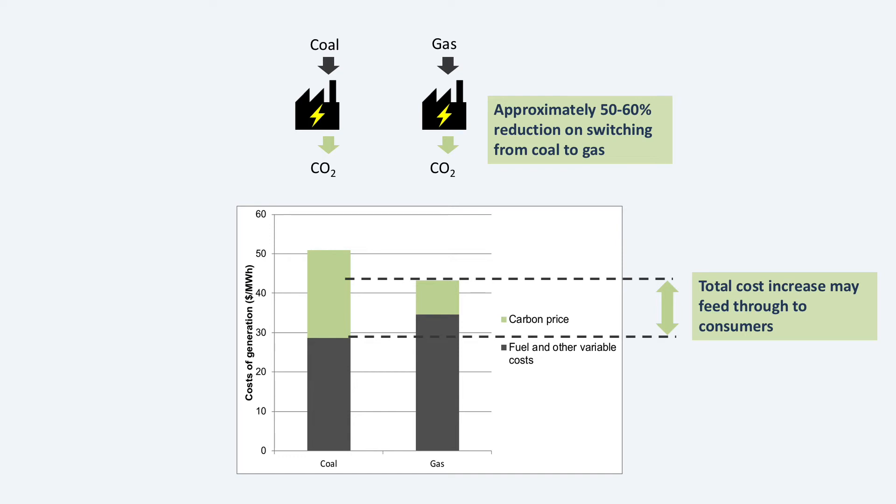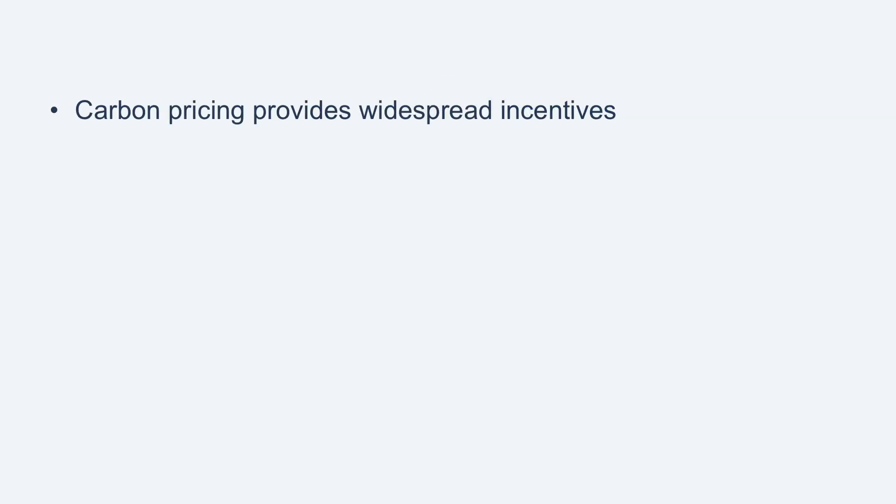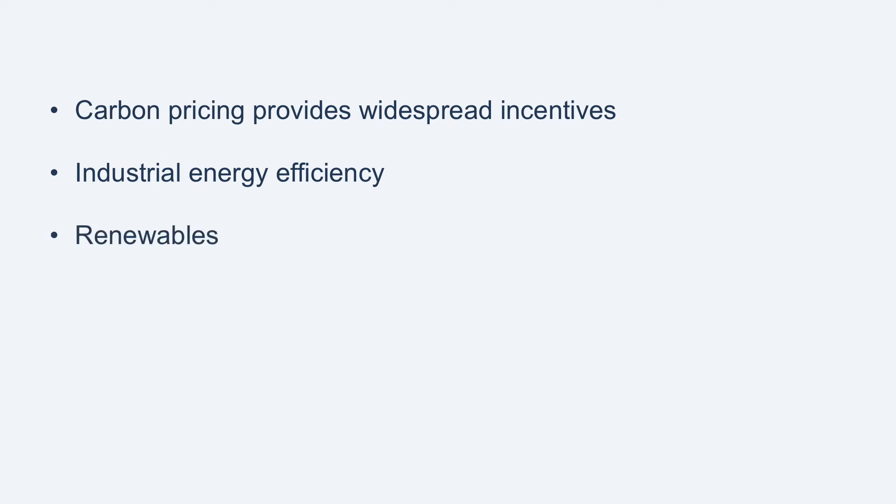There are many other examples of carbon pricing working in similar ways. Indeed, one of the advantages of carbon pricing is that it can create incentives over many different types of emissions. For example, when making an investment in industrial production, a carbon price will help create incentives to install more efficient technology with lower emissions. Similarly, although gas plants have lower emissions than coal plants, they have higher emissions than renewables such as wind power, which emit nothing from generation. So there will be an incentive to build new wind plant rather than new gas plant.